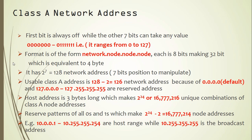The format of a class A network address is network.node.node.node, where each octet makes 8 bits — so 8 plus 8 plus 8 plus 8 equals 32 bits total, which is equivalent to four bytes.